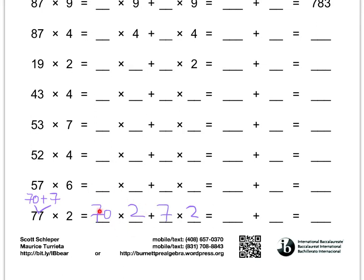Now, 70 times 2. Well, I know 7 times 2 is 14, and if I put that 0 back on for 70, then it should be 14 with a 0 at the end, or 140. Then I have 7 times 2 here, and we already know that that's 14. And then all I have to do is add these two numbers. 140 plus 14 equals 154.